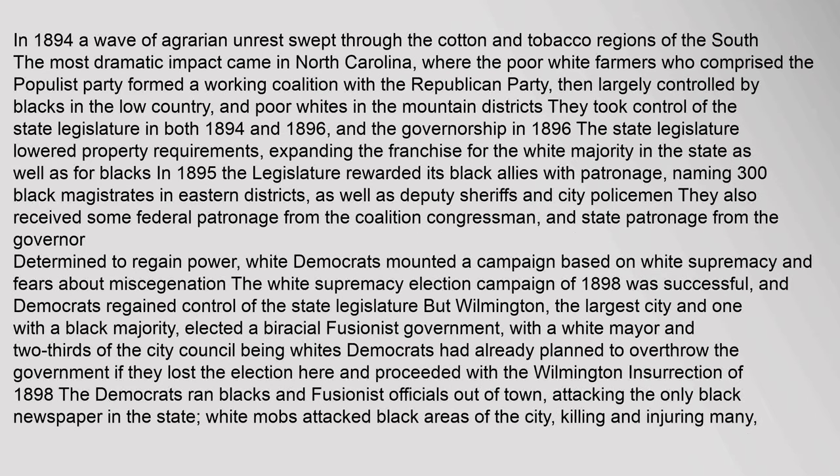In 1894 a wave of agrarian unrest swept through the cotton and tobacco regions of the South. The most dramatic impact came in North Carolina, where poor white farmers comprising the Populist Party formed a working coalition with the Republican Party, then largely controlled by blacks in the low country and poor whites in the mountain districts. They took control of the state legislature in both 1894 and 1896, and the governorship. In 1896 the state legislature lowered property requirements, expanding the franchise for the white majority and for blacks.